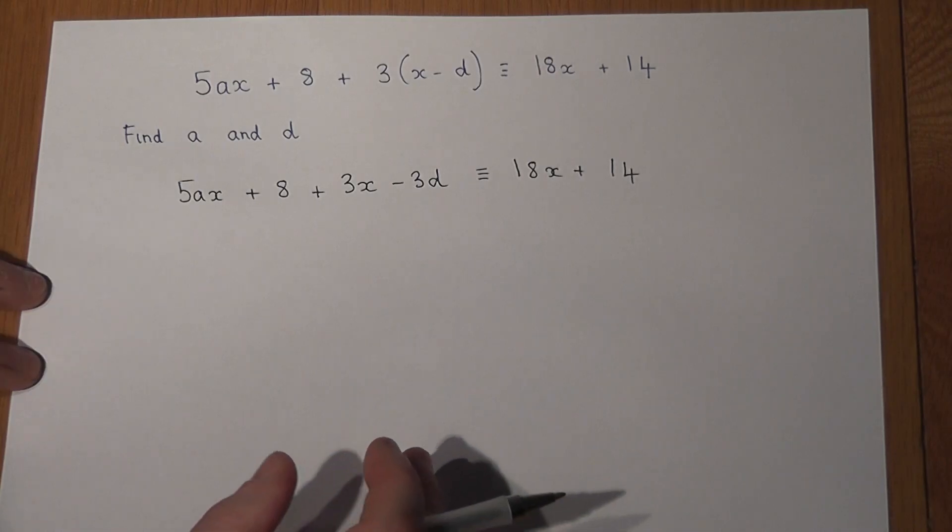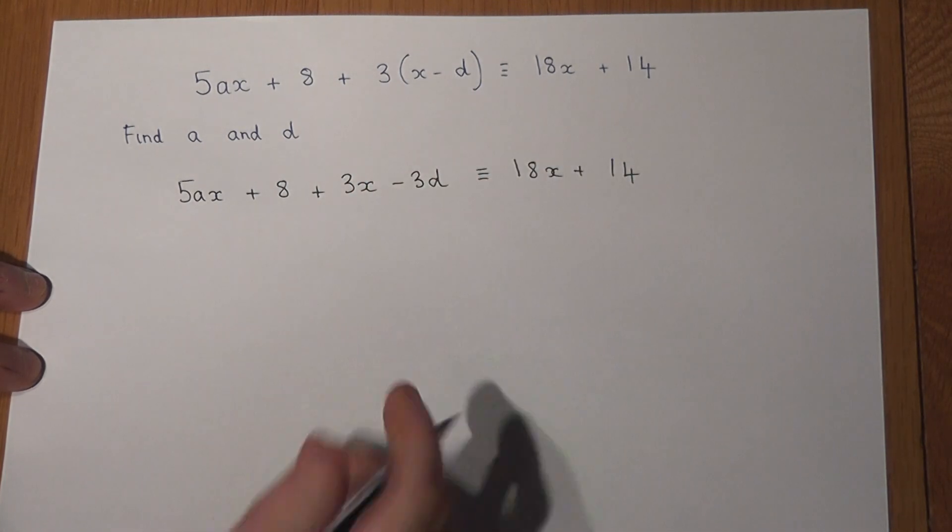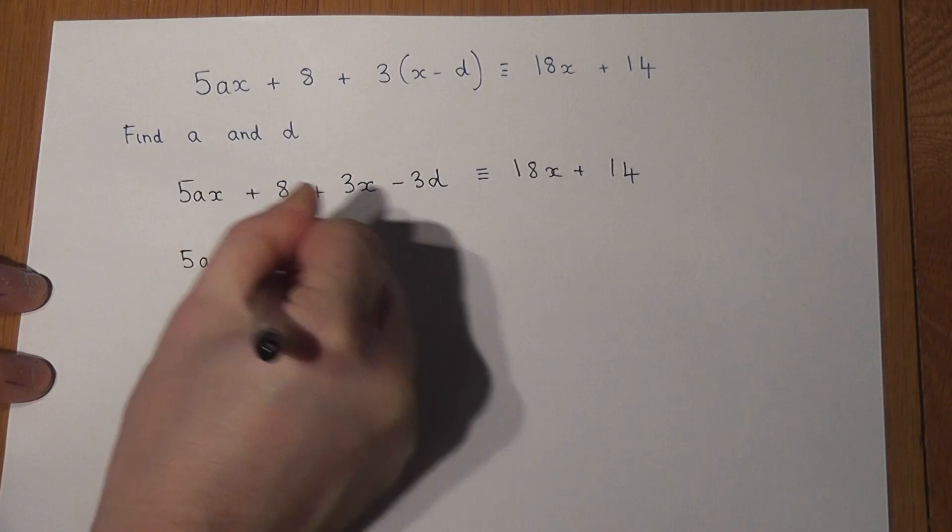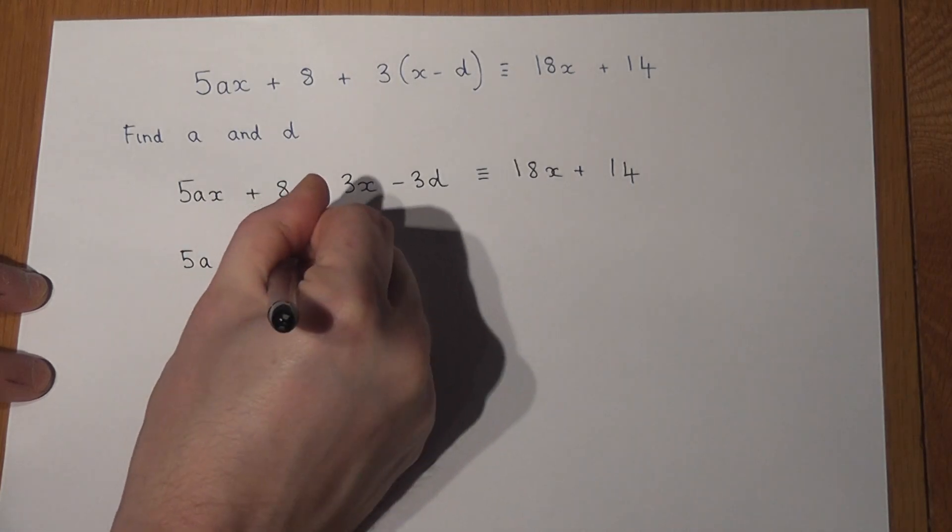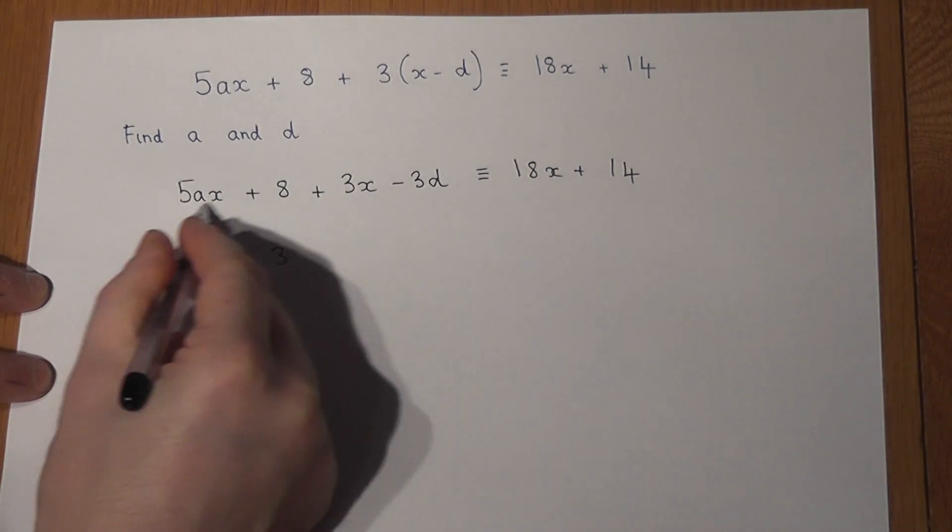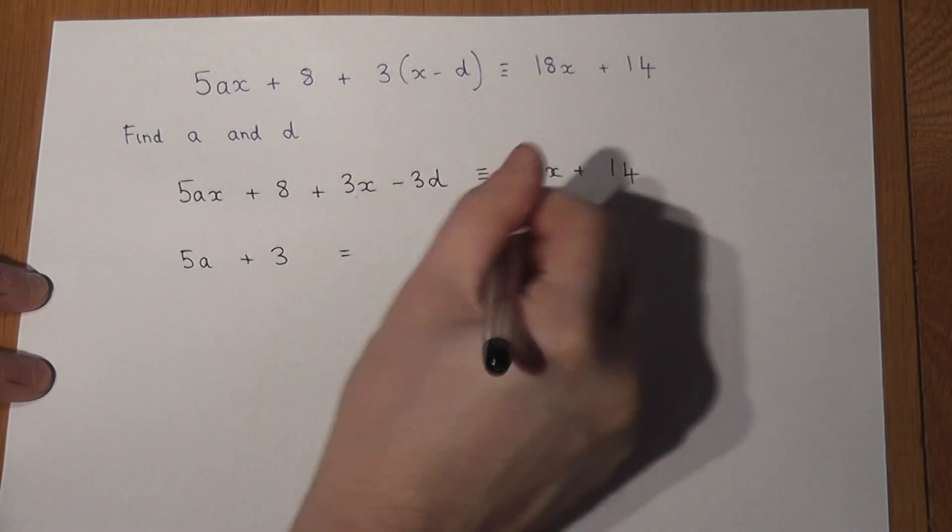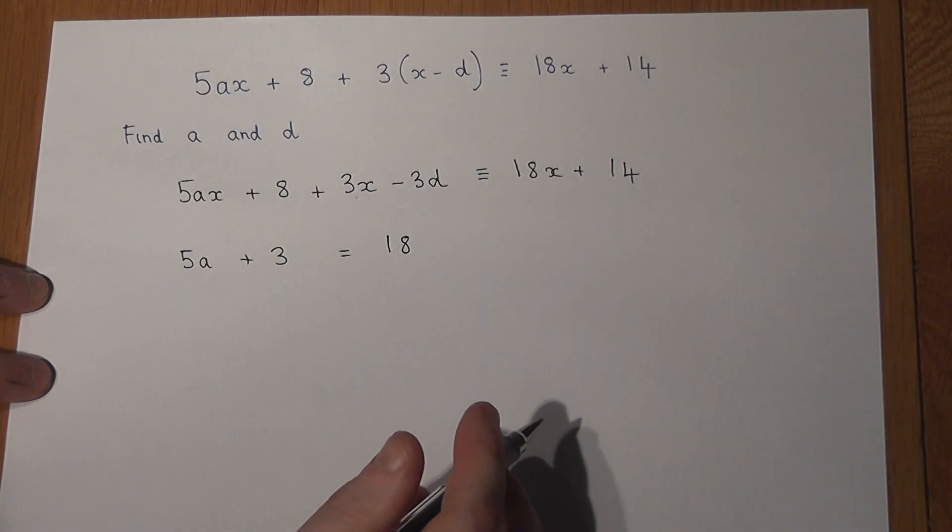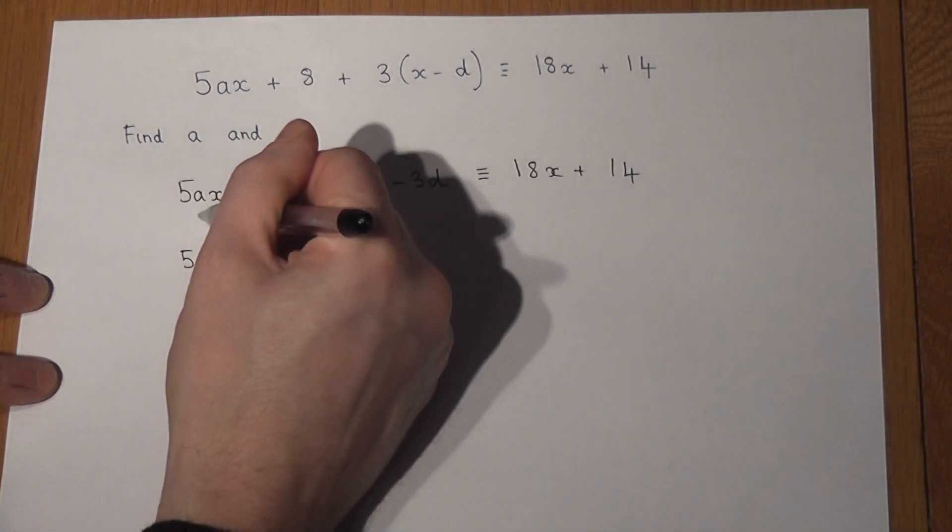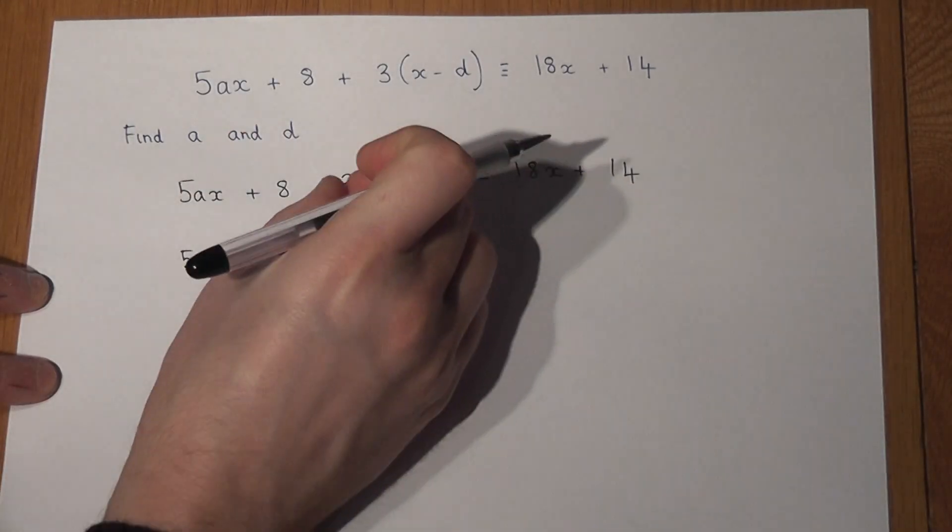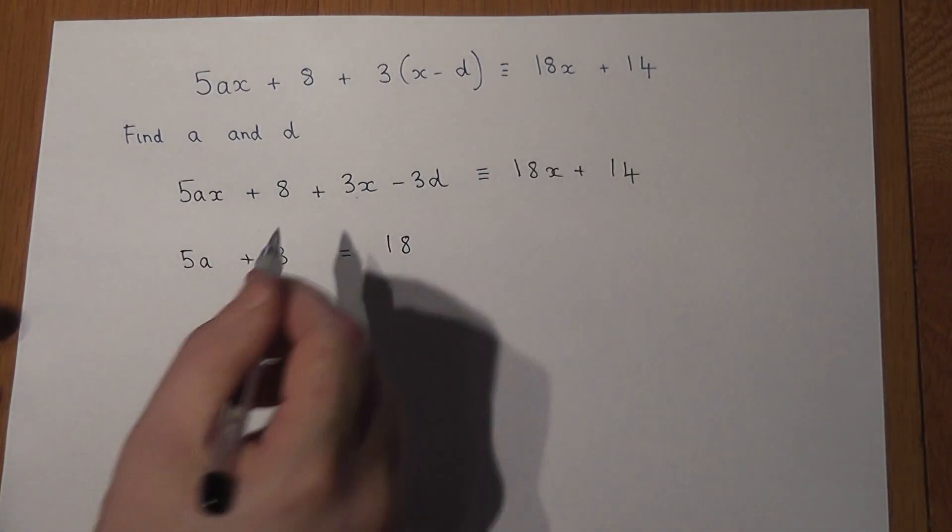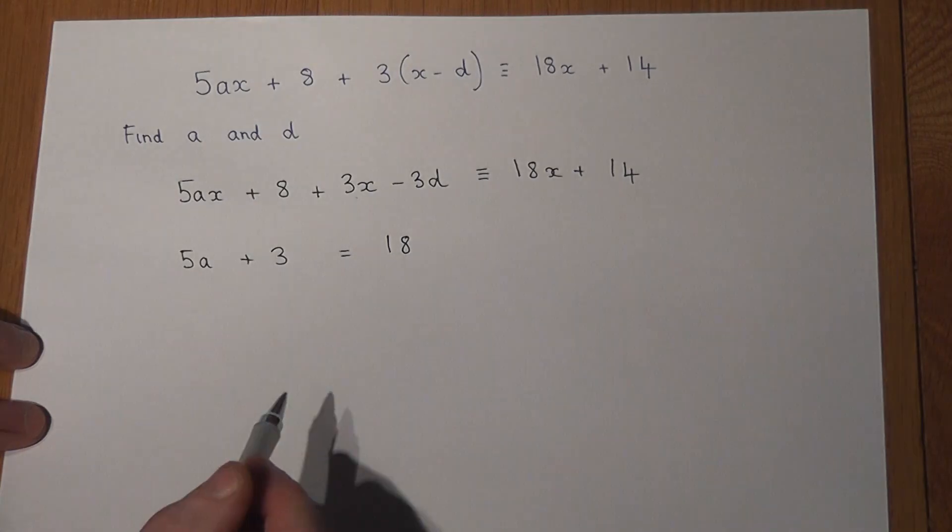The trick here is to look at the x terms first of all. So if we look at the x terms, I've got a 5a and a 3 on the left hand side and I've got an 18 on the right hand side. So I've sort of ignored the x's, but there's a 5a and a 3 on the left hand side and an 18 on the right hand side. So to find a, I just need to solve this equation.